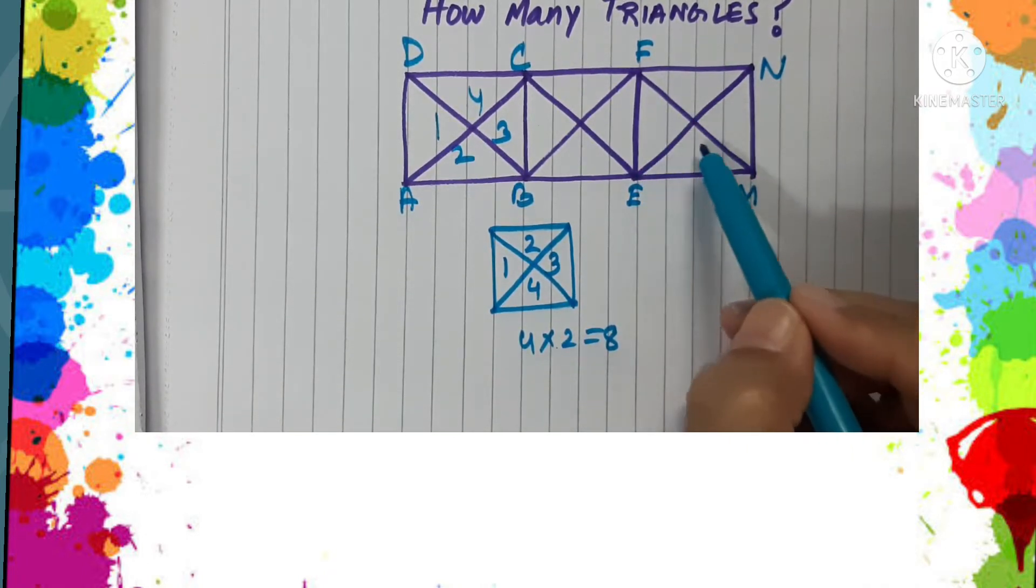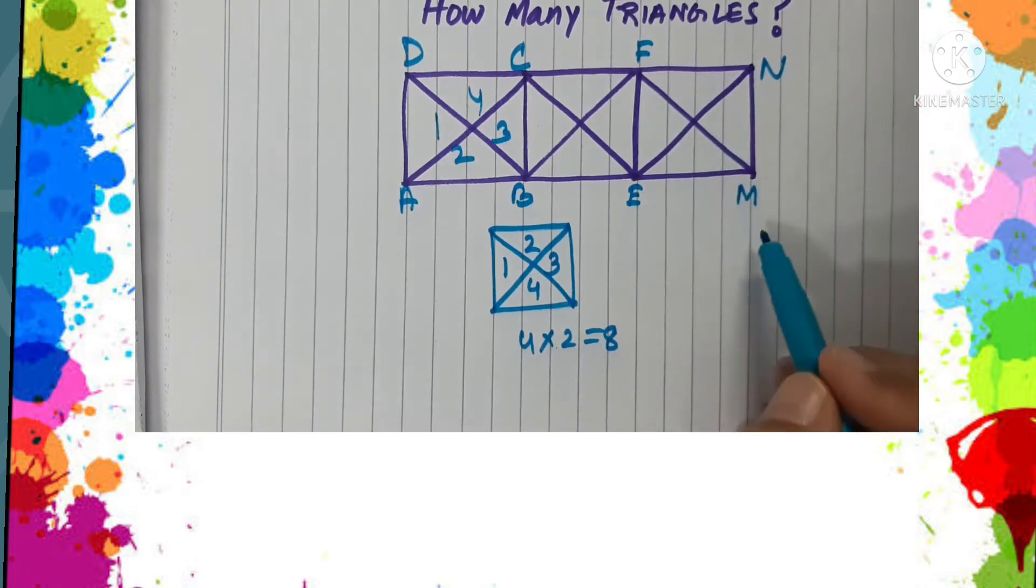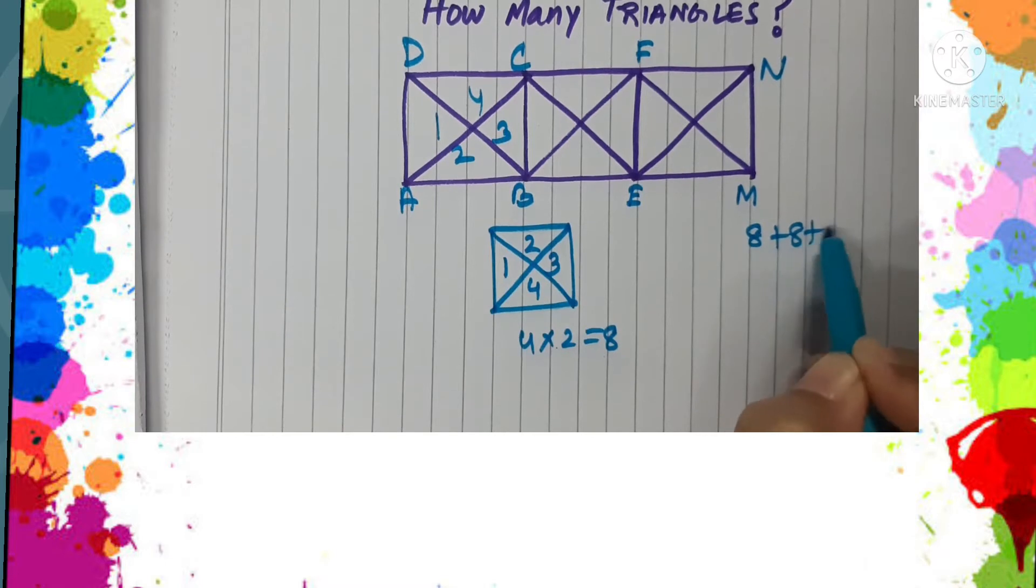So 8 plus 8 plus 8 plus 8 is 24. But interestingly, you will see that if we get a shape like a square divided by the help of diagonals...